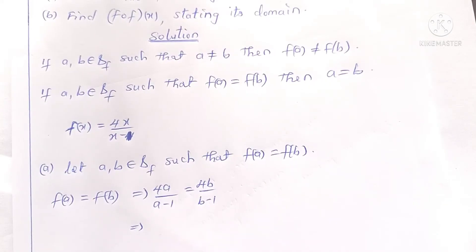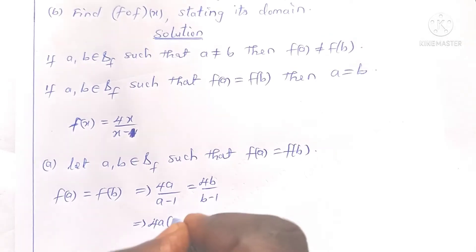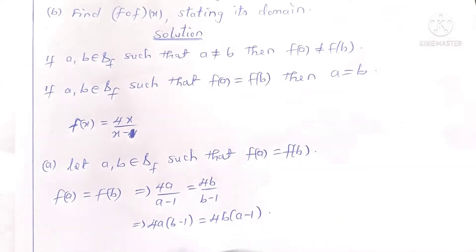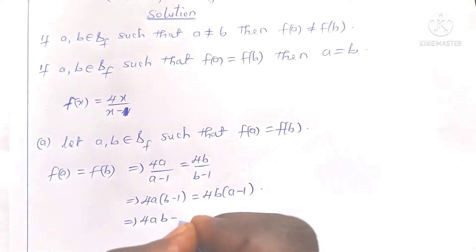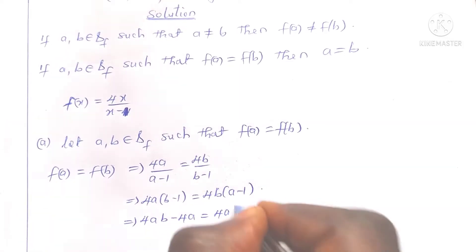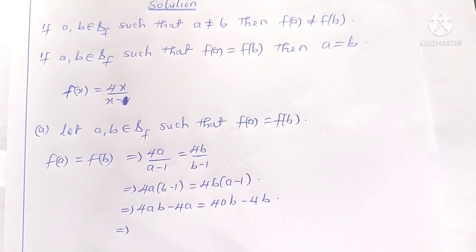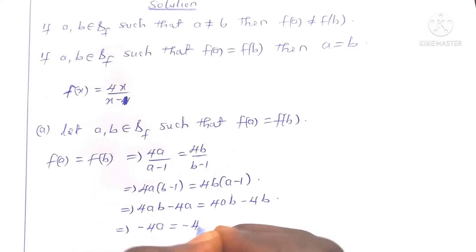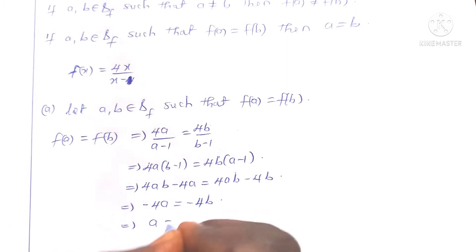If we cross multiply, we obtain 4a times (b minus 1), which is equal to 4b times (a minus 1). Expanding this gives 4ab minus 4a, which is equal to 4ab minus 4b. Since 4ab is common on both sides, subtracting 4ab from both sides gives negative 4a equals negative 4b. Dividing both sides by negative 4, we obtain a equals b.